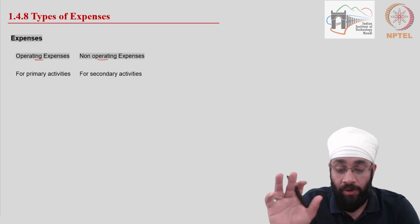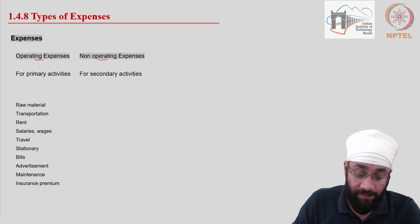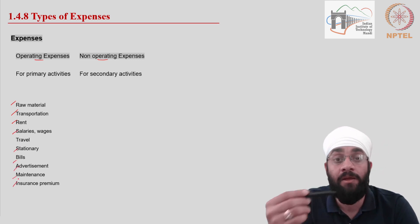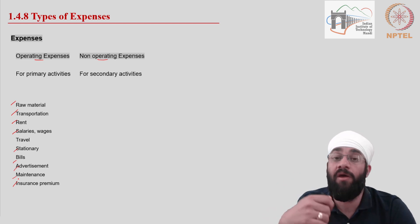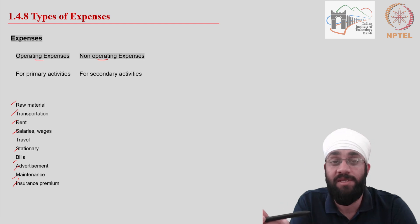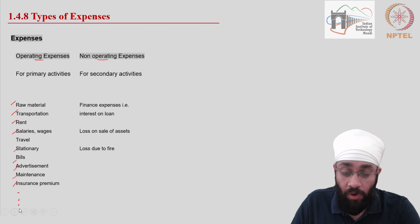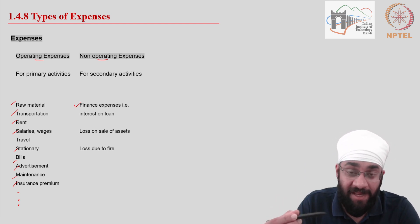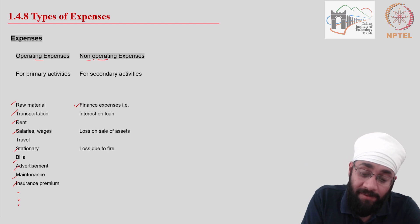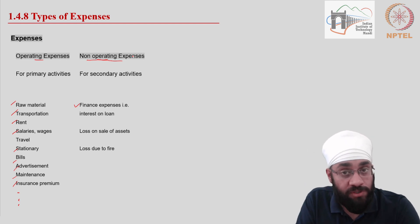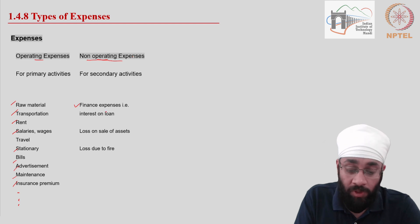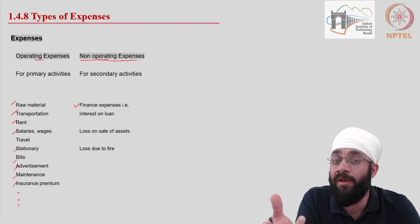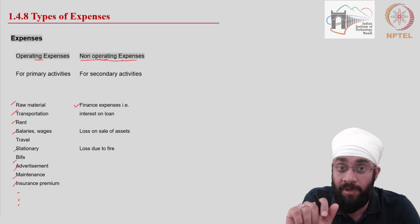Similarly, for types of expenses, we have two categories: operating expenses and non-operating expenses. Operating expenses are those incurred for the primary activity of the business. Examples include purchasing raw material, spending on transporting material, rent, and salaries — all of these are regular in a typical manufacturing business where you need to produce goods. These are operating expenses, and the list can be very long.